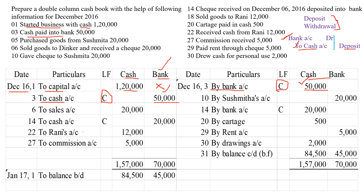Moving on to the next one: purchased goods from Sushmita. Goods are purchased from Sushmita and cash is not paid. As I already told you, only transactions which affect cash or bank account will be recorded. This is a credit purchase and it will not be recorded in the cash book at all.